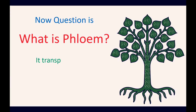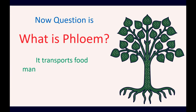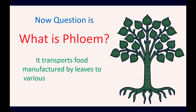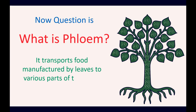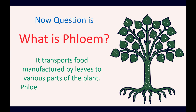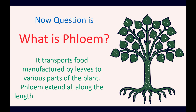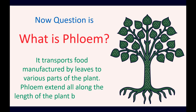Now, what is phloem? Phloem transports food manufactured by leaves to the various parts of the plant. Phloem extends all along the length of the plant body. As you can see through the picture, food prepared by the leaves is translocated to all aerial parts of the plants, including the roots.